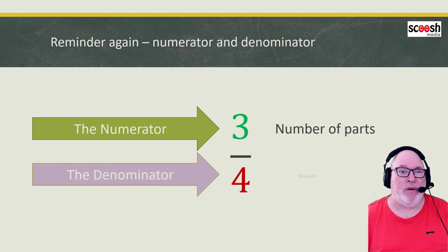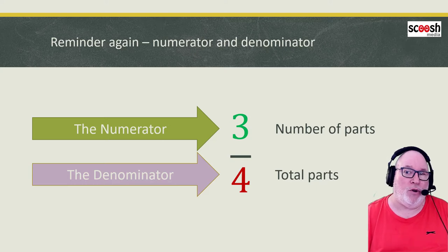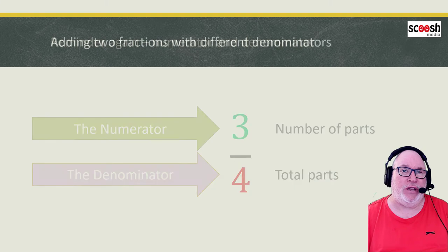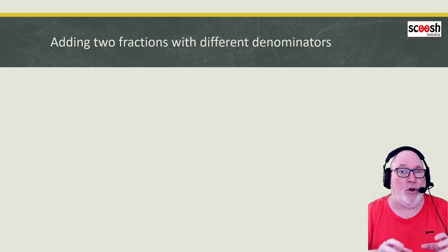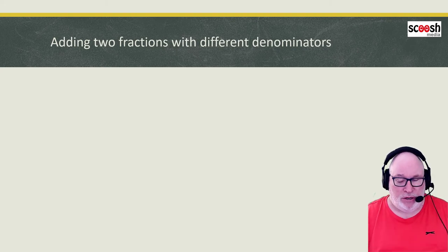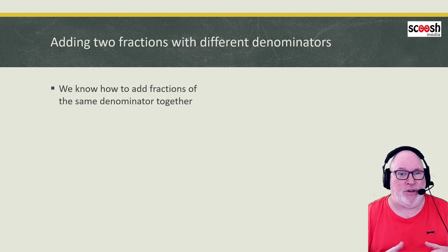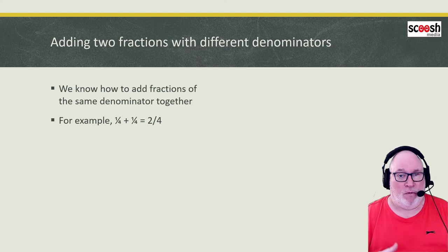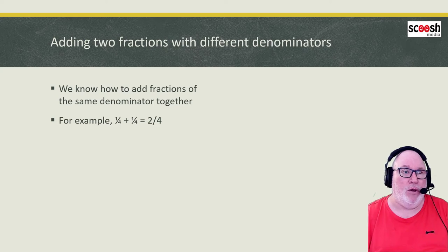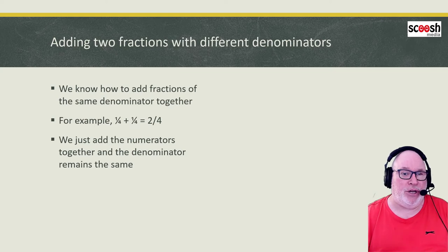So the number of parts is the numerator and the total parts is the denominator. Now, adding two fractions together that don't have the same denominator is slightly different to adding two fractions that do have the same denominator. When adding fractions with the same denominator, we just add the numerators together - the numerator changes and we add the two numbers on the numerator, while the denominator at the bottom remains the same. One quarter plus a quarter equals two quarters - that's quite straightforward.